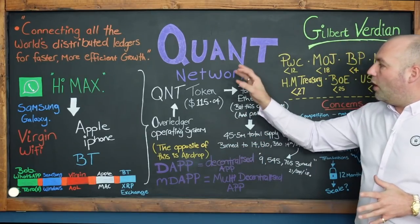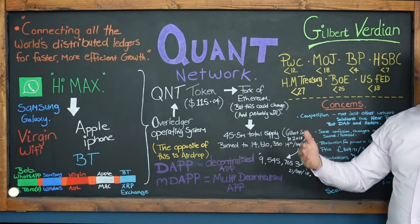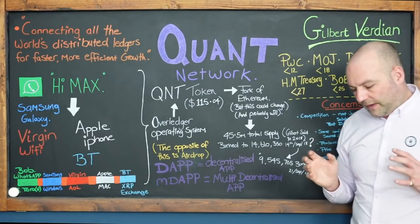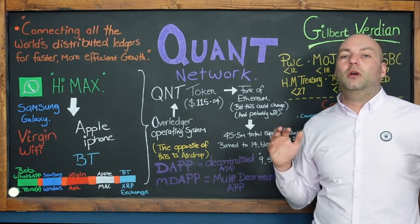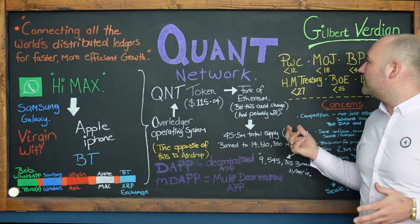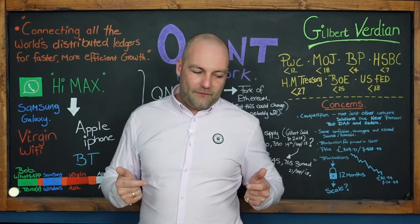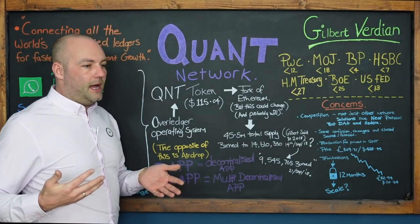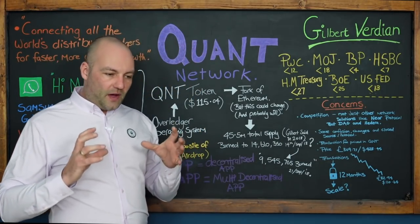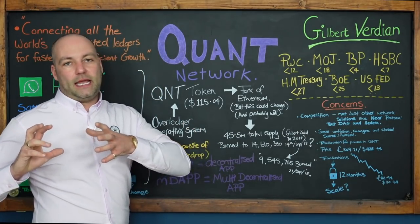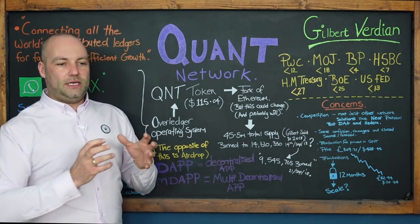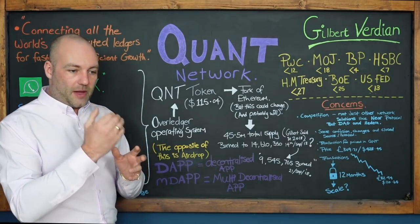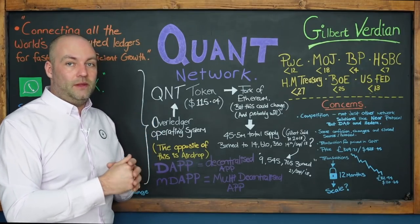With an MDAP you can cherry-pick the best features from all the different platforms because they all interoperate. You could take the security of Hedera Hashgraph, the speed of one platform and the branding of another, and put the best bits all together for your app. So that's apps, DAPs, and MDAPs. That's kind of what Quant Network is — and the QNT token is simply a way of paying for your Overledger operating system.